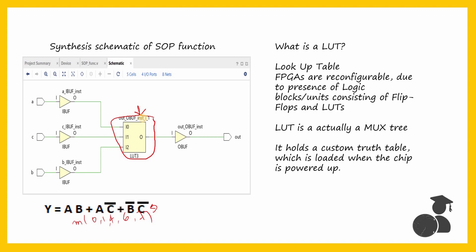The schematic does not contain any AND or OR gates to represent those minterms — everything is handled by a single LUT. So what is an LUT? LUT stands for lookup table, and a lookup table is internally just a tree of multiplexers. FPGAs are reconfigurable, and the reason for this reconfigurability is that the logic blocks in the FPGA consist of flip-flops and LUTs. The MUXes in the LUT make them reconfigurable, since a single 2-to-1 multiplexer can function as many basic gates based on the input and select line configuration.